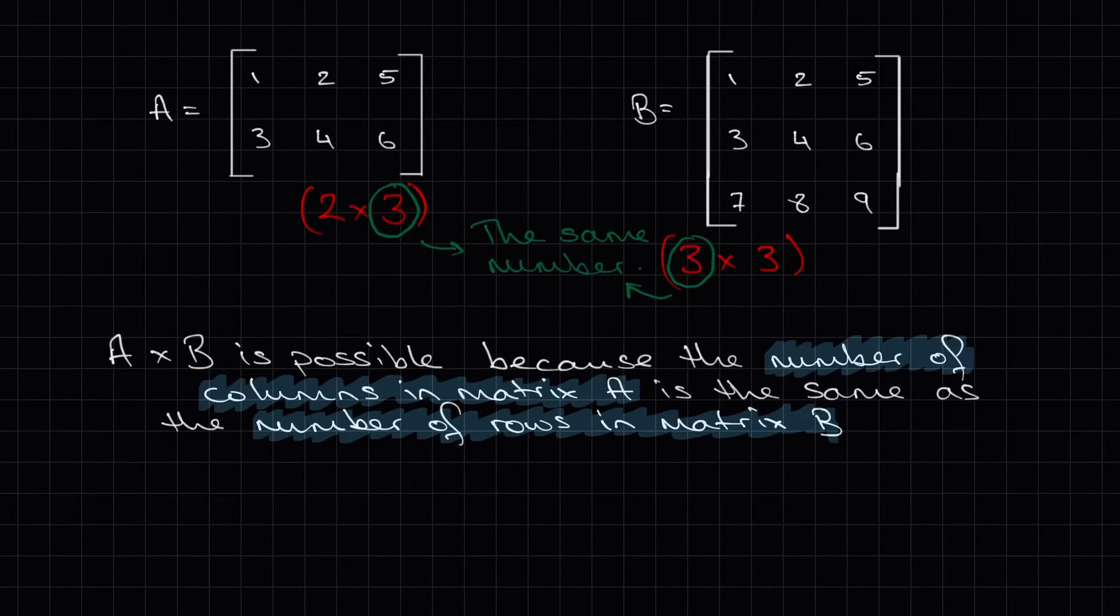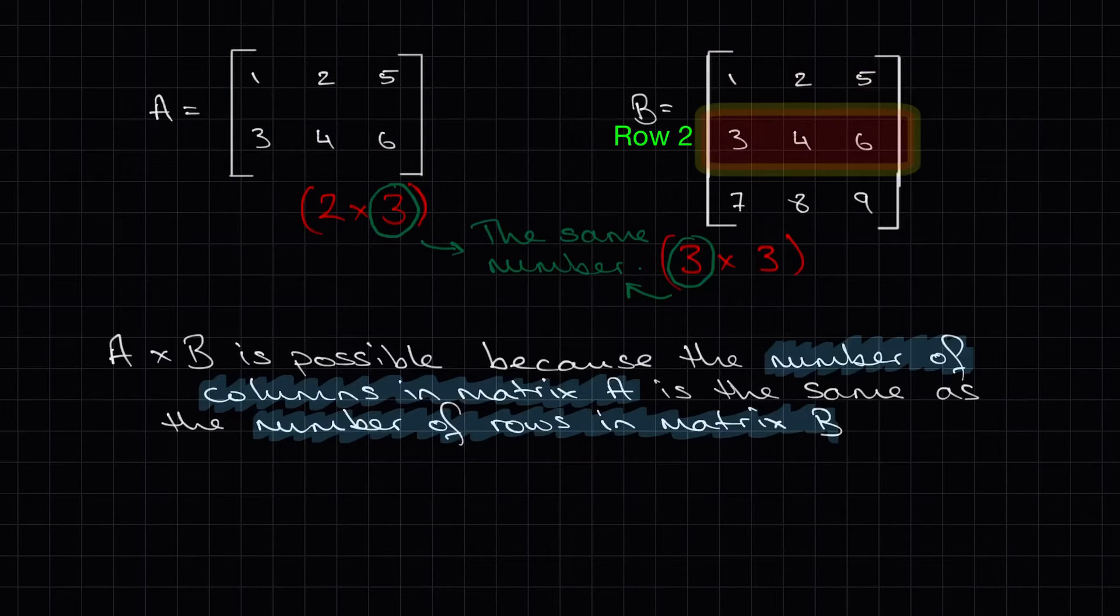When we multiply matrices together, the most important thing that we have to take note of is their order. In this example, matrix A times matrix B is possible because the number of columns in matrix A is the same as the number of rows in matrix B.